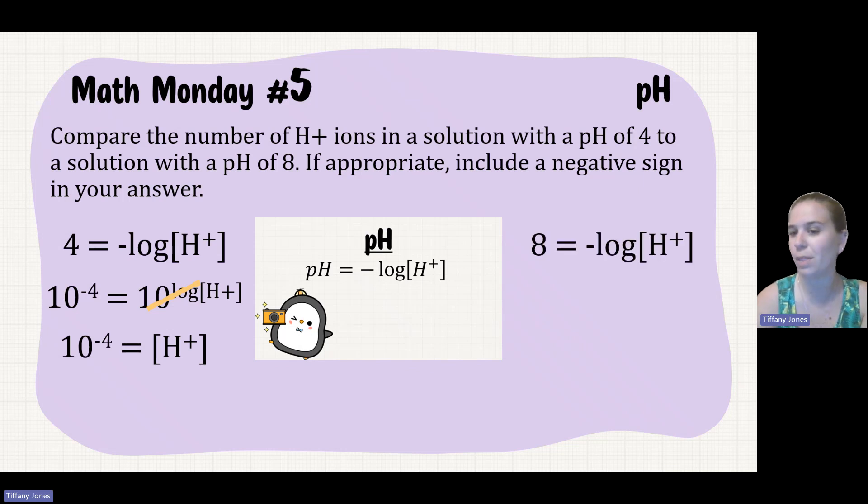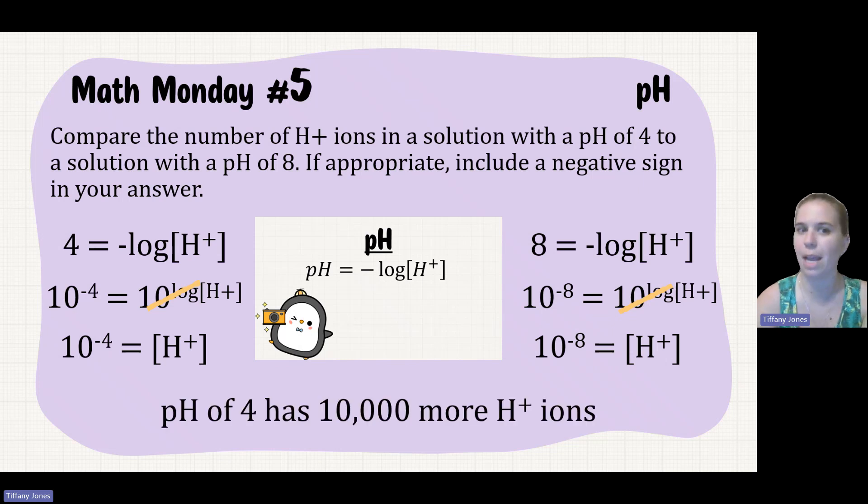We'll do the same thing for pH 8. So 8 = -log[H+]. We take 10 to the power on both sides to get rid of the logarithm, giving us 10^-8 = [H+]. The difference between these is 10^4, or 10,000 more H+ ions at pH 4.